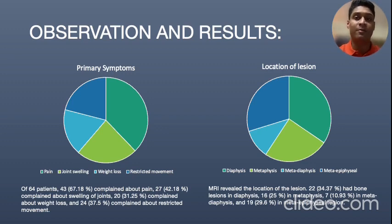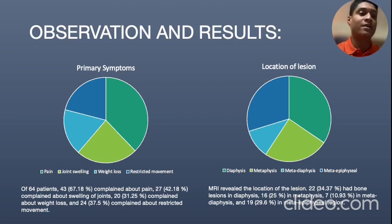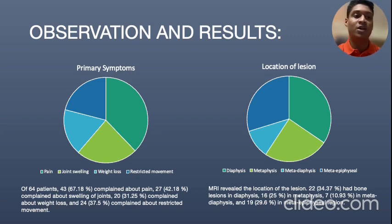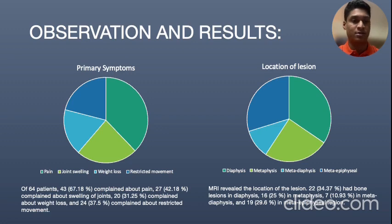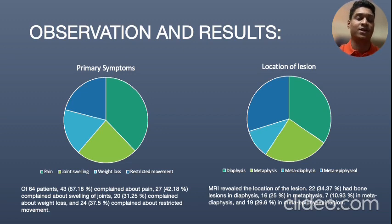In addition to primary symptoms, the location of the lesion was also considered. MRI revealed that 22 patients had bone lesions in the diaphysis (34%), 16 had lesions in the metaphysis (25%), 7 had lesions in the metadiaphysis (10.9%), and 19 had lesions in the meta-epiphyseal region (29.6%).